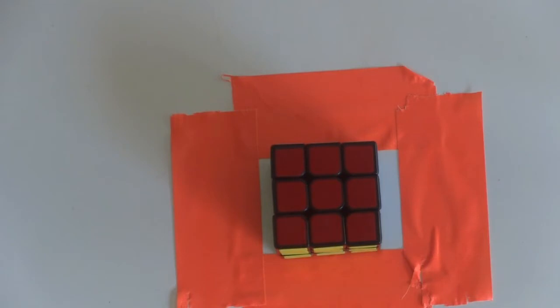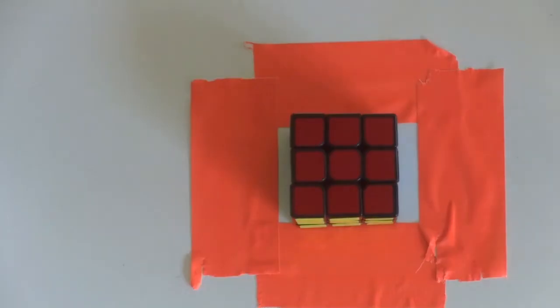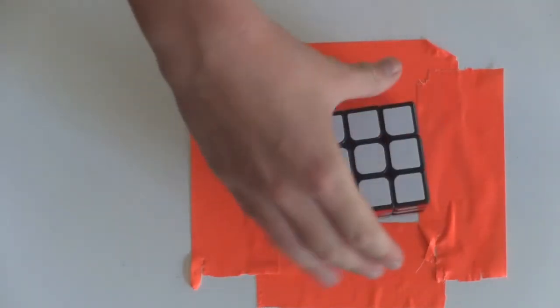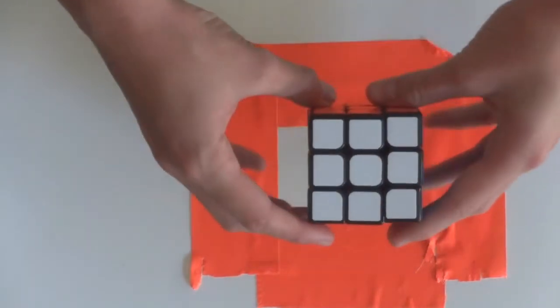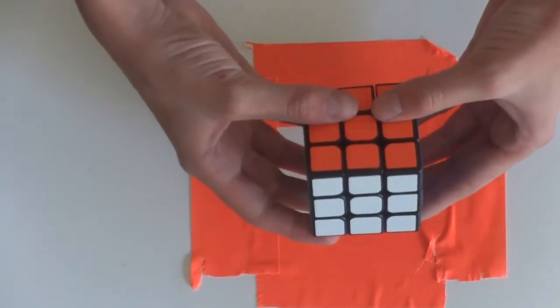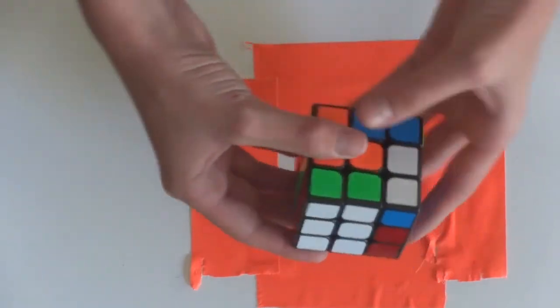So let's get right into it. Now what you want to do is pick up your cube with the white side facing up and just rotate it in a circle: one, two, three, four.